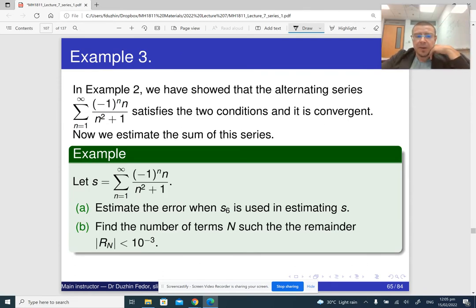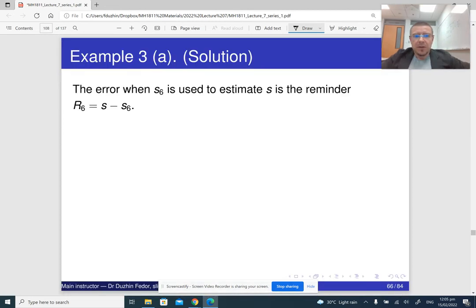And specifically, there are two parts. So estimate the error of S_6, this is part A, and in part B, how many terms of the series do we need to take to guarantee that the remainder is less than 1 over 1,000? Okay, so let me go through these two parts. So remember that our series was (-1)^(n-1) times n over n squared plus 1, from 1 to infinity.